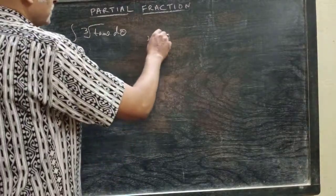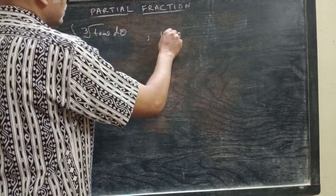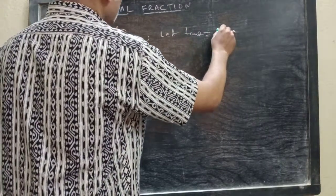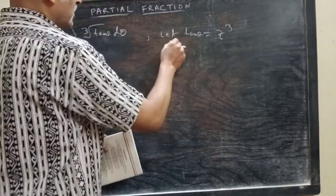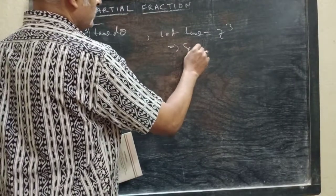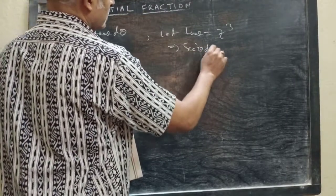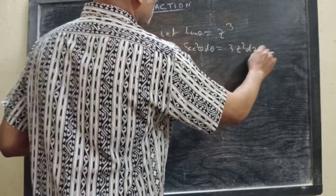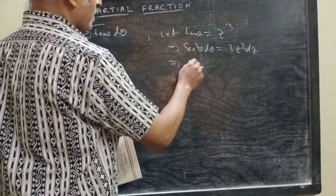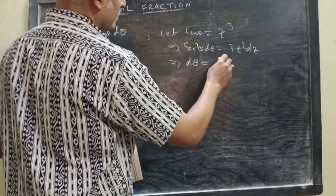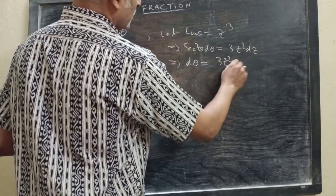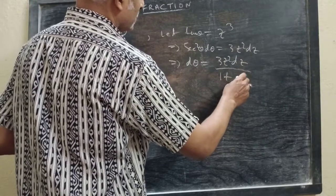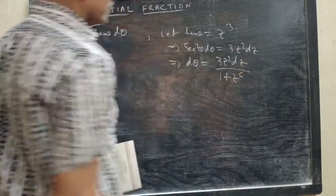For this, let tan θ = z³. Then it becomes sec²θ dθ = 3z² dz, so dθ will be 3z² dz by sec²θ, that is 1 + tan²θ, that is 1 + z⁶.